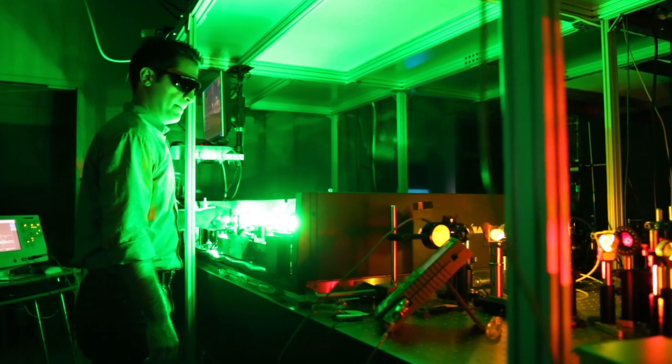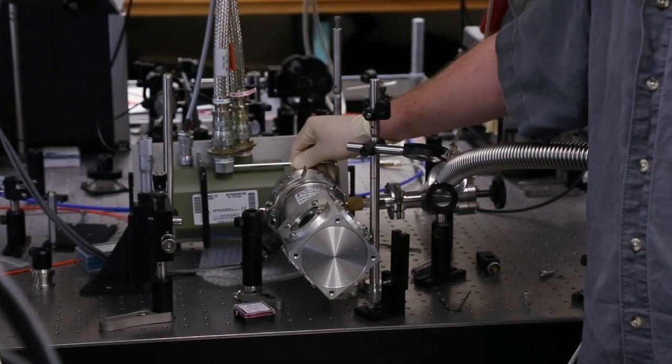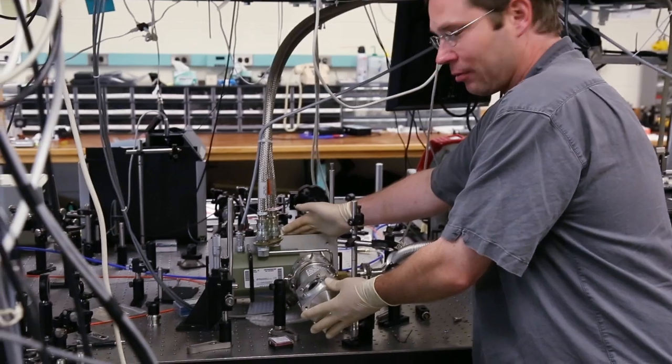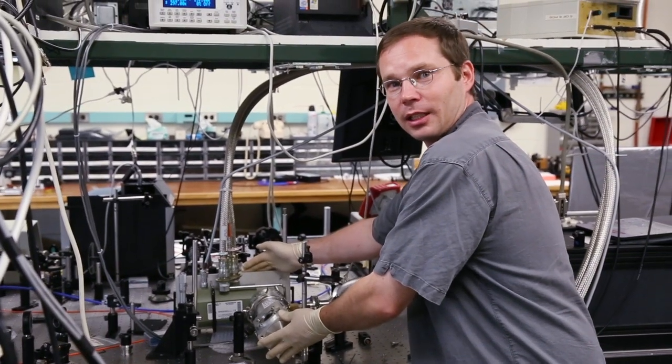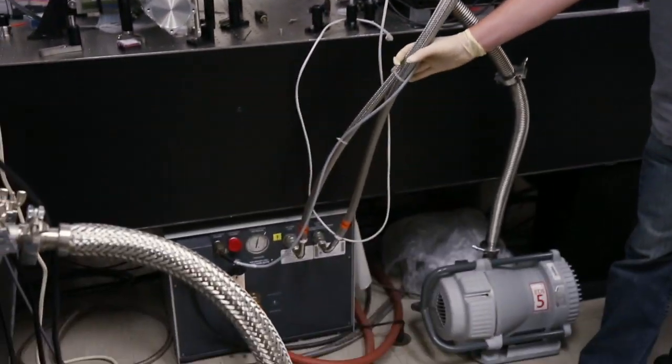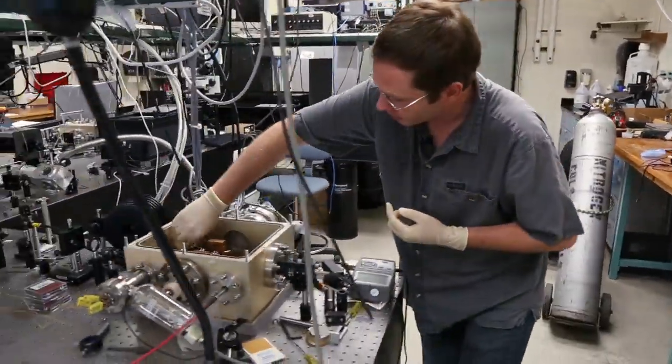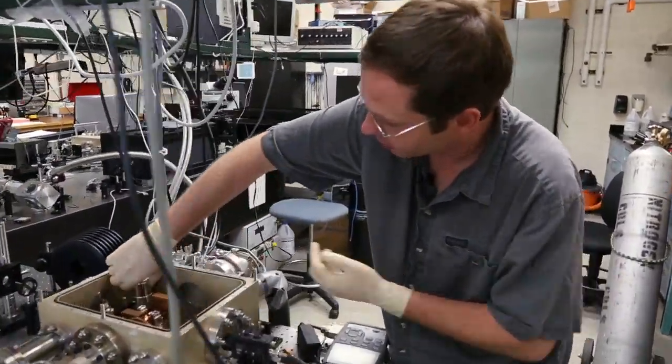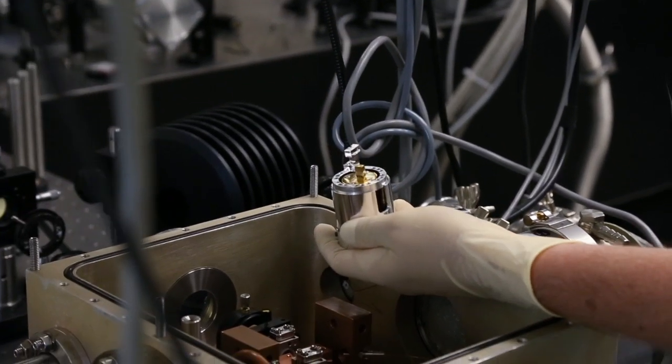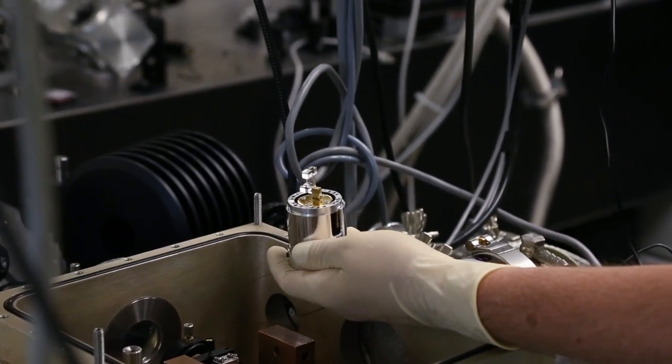So this is a traditional closed cycle helium cryostat and as you can see it is very big, it takes up a lot of optical table space and it is run by a giant compressor that's very noisy when it's turned on. We can cool to similar kind of temperatures with our optical refrigeration device which as you can see is much smaller, much more compact.